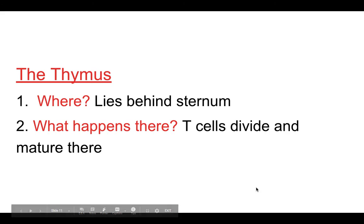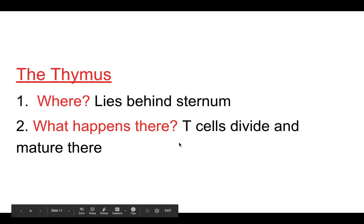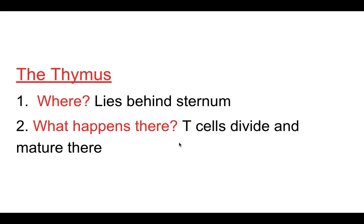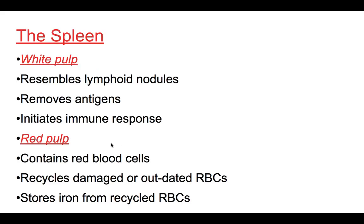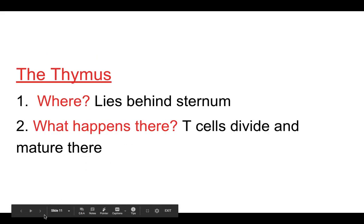Your thymus is another player — it's right behind your sternum, and this is where T cells are produced. When you were born, babies don't really have a developed immune system. As soon as you're born, your thymus starts to produce millions and millions of T cells. By the time you hit puberty, your body has accumulated so many T cells — which have the ability to differentiate — that you don't need to constantly make new ones. Stem cells can continue to make different kinds of T cells. After that, your thymus becomes non-functional and just fills in with fat.